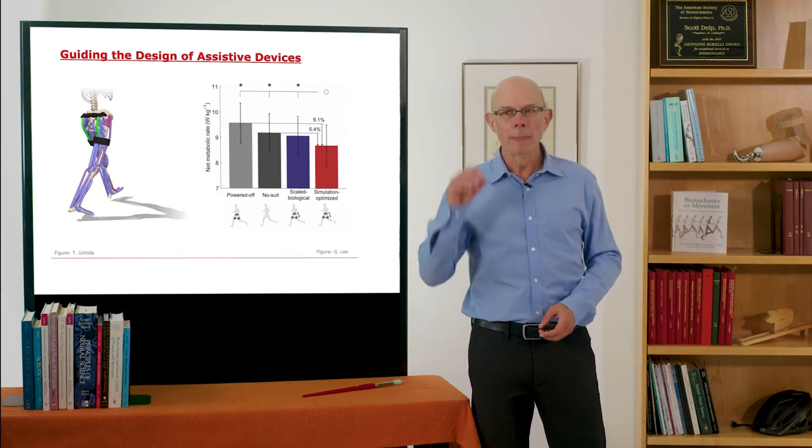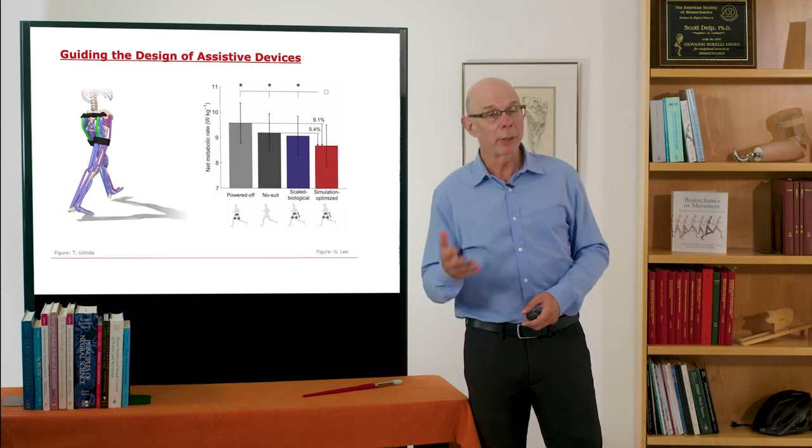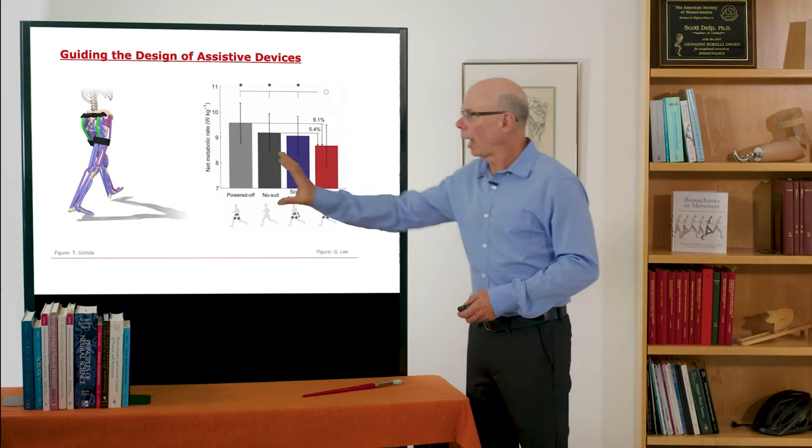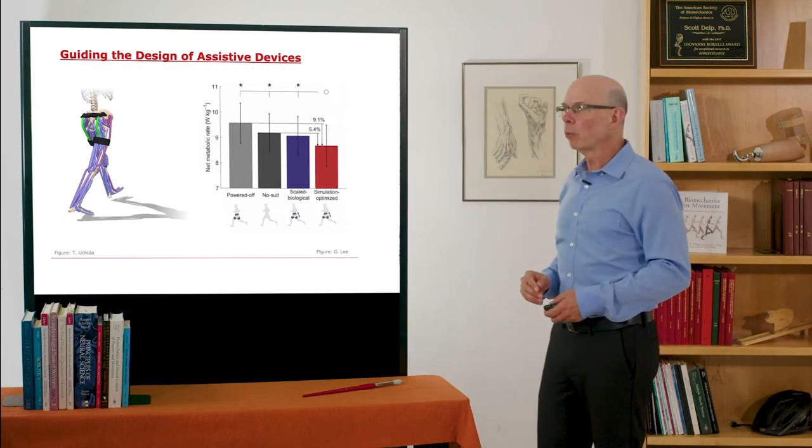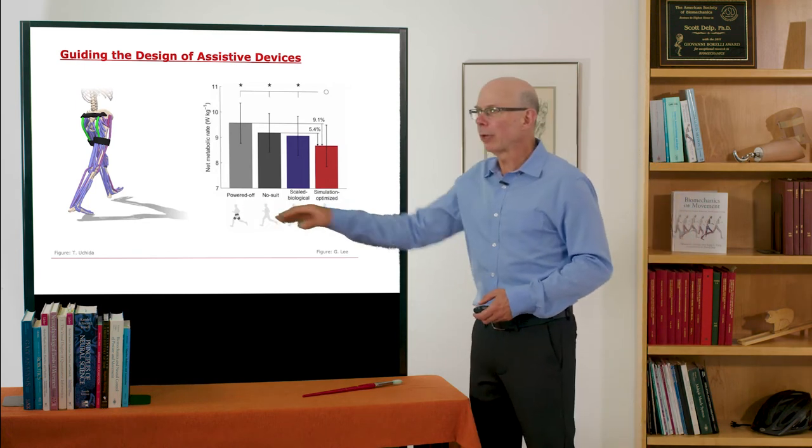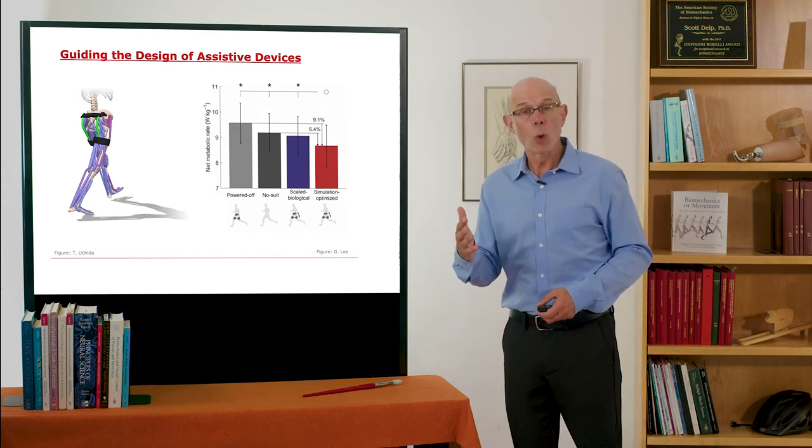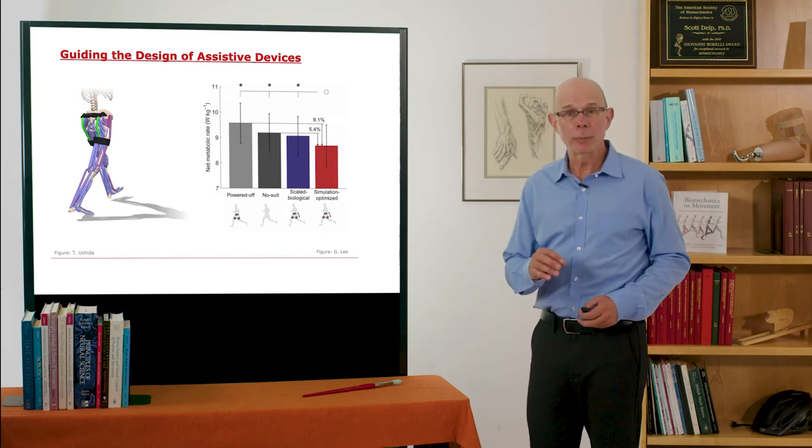You can also design assistive devices. This was a really beautiful study—the simulation part of this was led by Tom Yoshida, the co-author of the book, where he could simulate an exoskeleton designed to improve running performance. And here's experimental data that was done after the simulations, where Tom predicted what the best actuation for the exoskeleton would be.